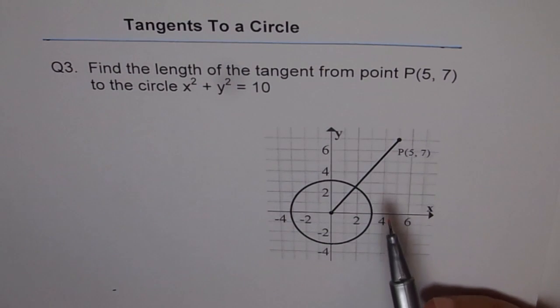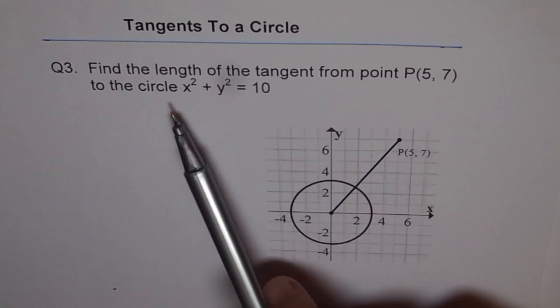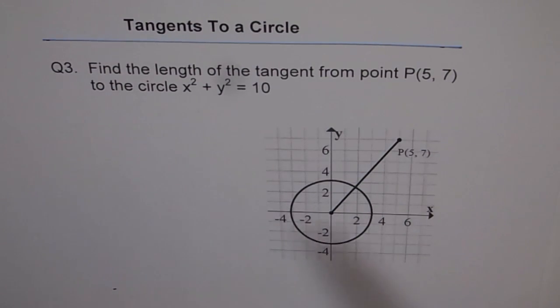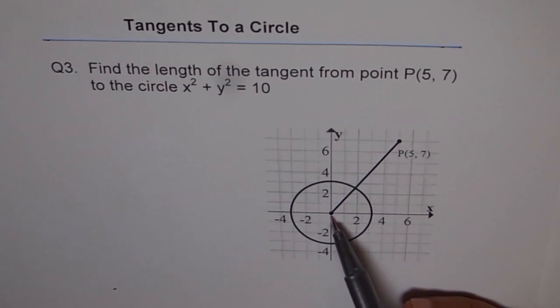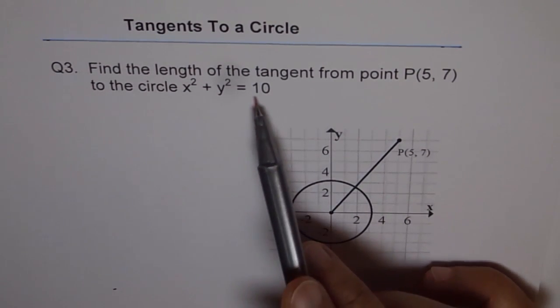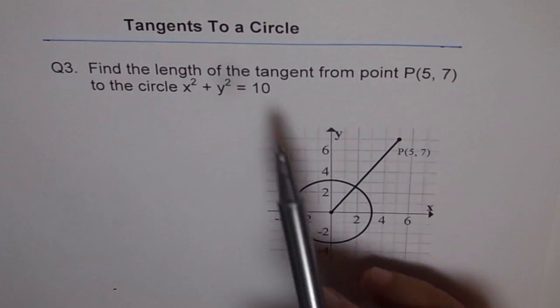So we already have a figure for you, and here when we say x squared plus y squared equals 10, that means the circle was centered at the origin and radius as square root of 10. That's the radius.